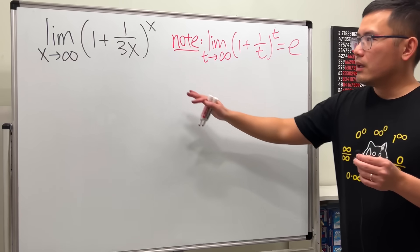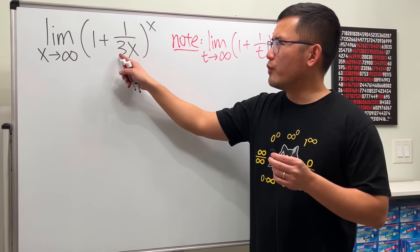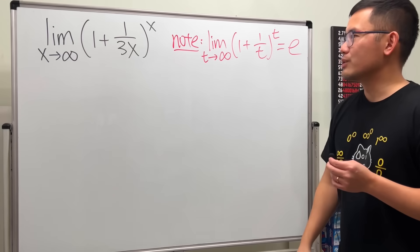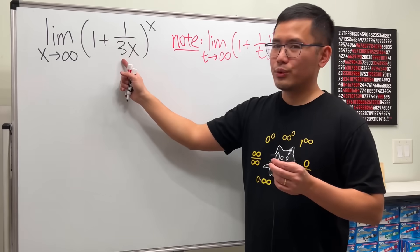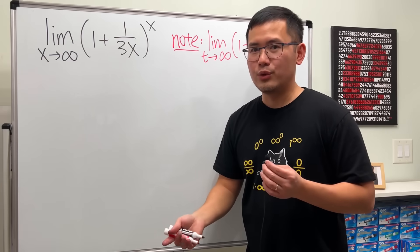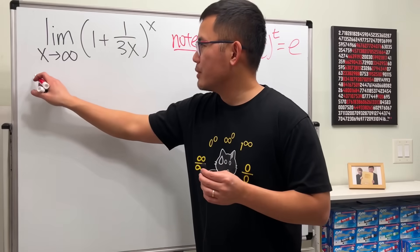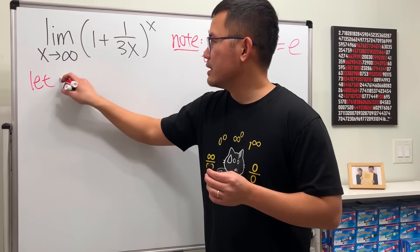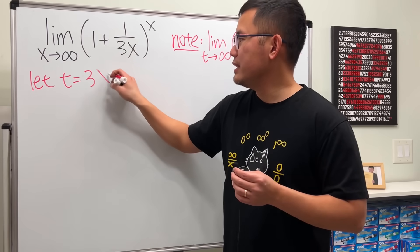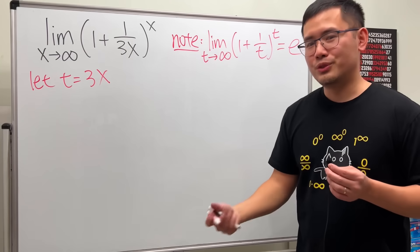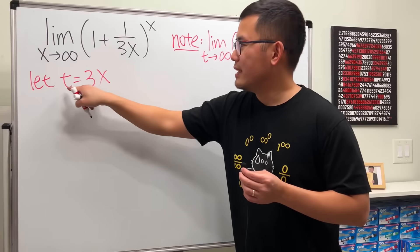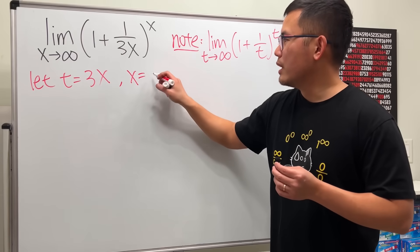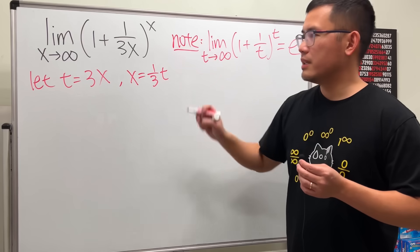Anyway, though, let's see. Here we have 1 over 3 and an x. So what do we do? Well, I want to make this equal to that. And let's just do a change of variable. Have a look. I'm going to say that t equals 3x. Can we do that? Sure thing. But this is x. So what can we do? Divide 3 on both sides. That means x is equal to 1 over 3t.